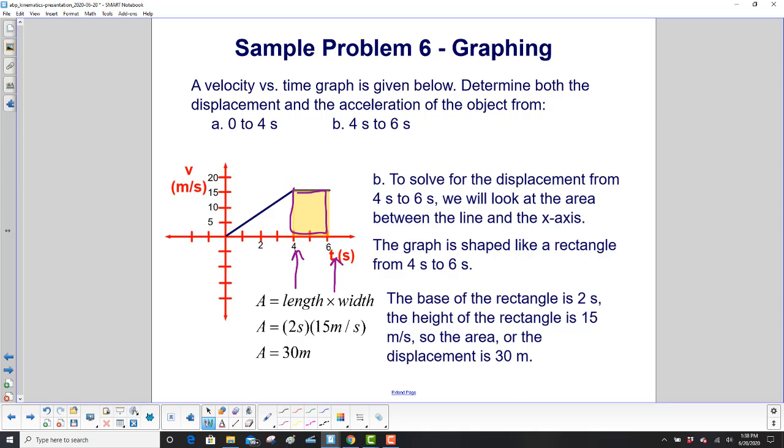The base is 2 seconds. The height of the rectangle is 15 meters per second. So the area or the displacement will just be the length times the width. 2 seconds times 15 meters per second. Seconds cancel out and we're left with 30 meters. That's the displacement.